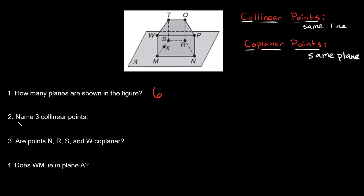Number two asks to name three collinear points — remember, these are points on the same line. The only place where three points appear on the same line is right here: M, X, and S. Every other line on this figure only has two points — for example, P and N, or N and R, or T and Q. So the answer for three collinear points is M, X, and S.